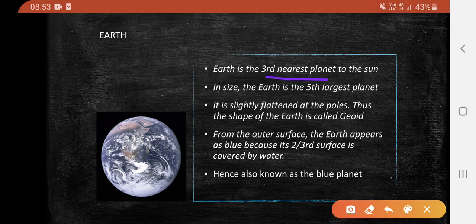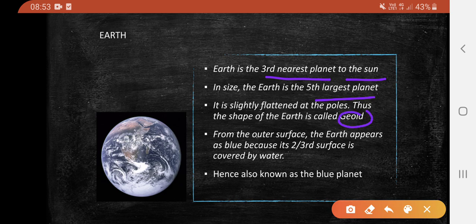Earth is the third nearest planet to the sun and the fifth largest planet in the solar system. It is slightly flattened at the poles, thus the shape of the Earth is called a geoid. From outer space, Earth appears blue because two-thirds of its surface is covered by water, and hence it is also known as the blue planet.